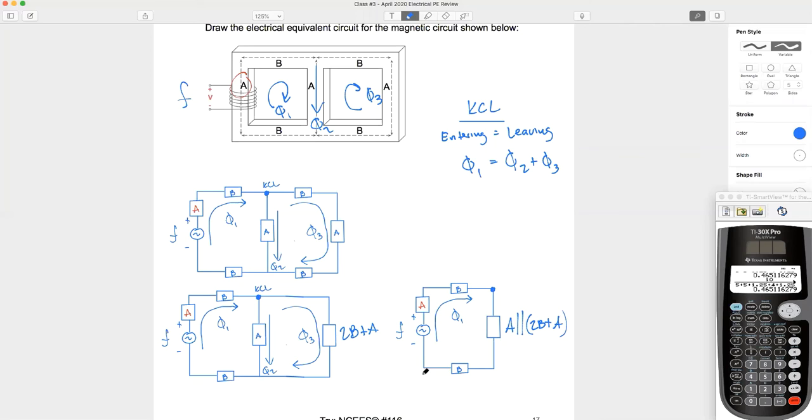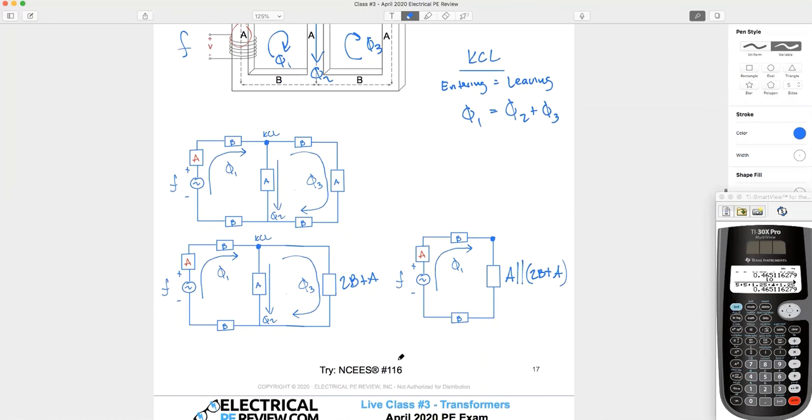Now, what about the total equivalent reluctance in the circuit? Do you guys feel comfortable solving that? What if I wanted to find, let's make that look like the crazy Roman numeral R that it is. How would we find the total equivalent? Now, everything is just series, right? So we can just sum it up. I've got A plus two B plus that A in parallel with two B plus A term.